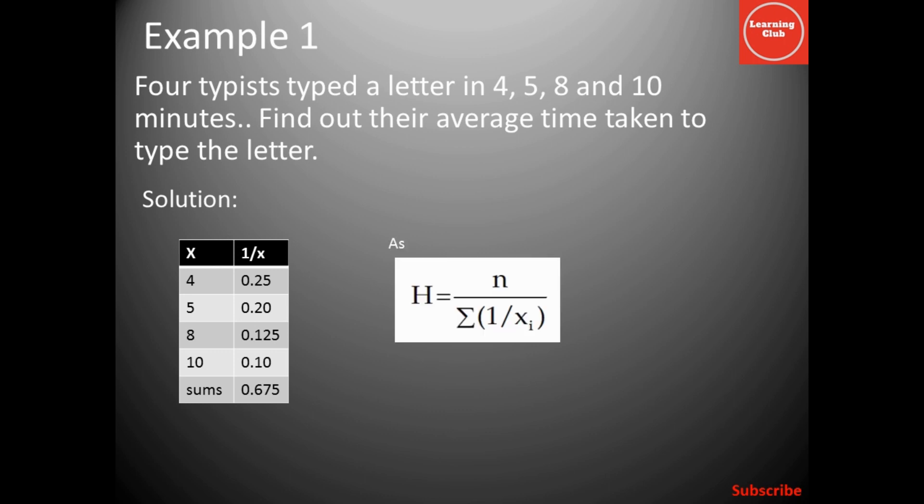As the formula of harmonic mean is equal to n over summation 1 over xi. Here, in this particular example, our n equals 4 and summation 1 over xi equals 0.675. So, putting the value and dividing 4 by 0.675, we get 5.93 minutes. It means 5.93 minutes is the average time taken by a typist to type this particular letter.